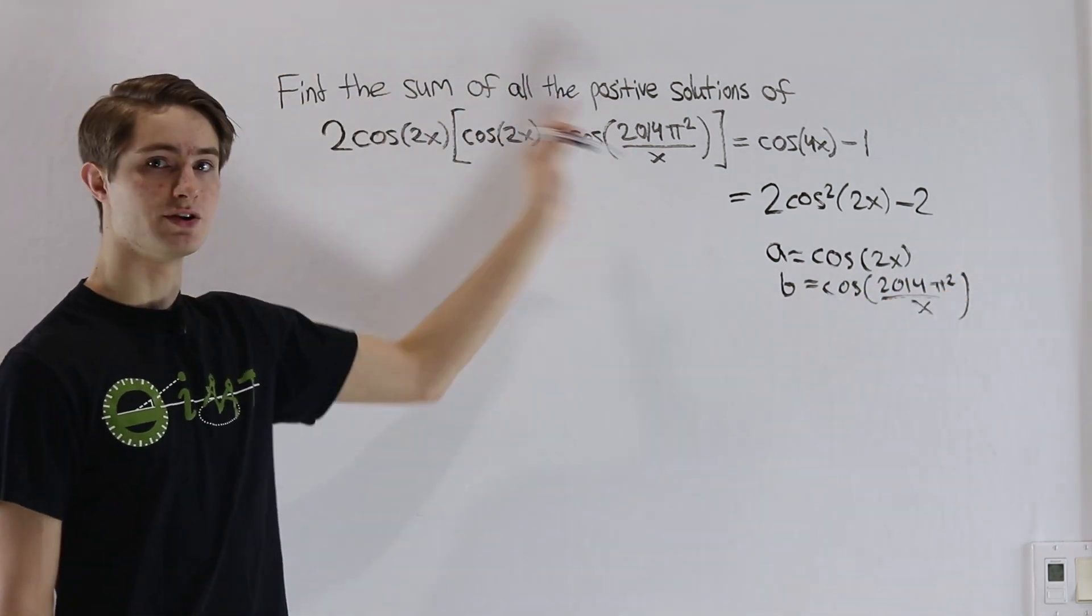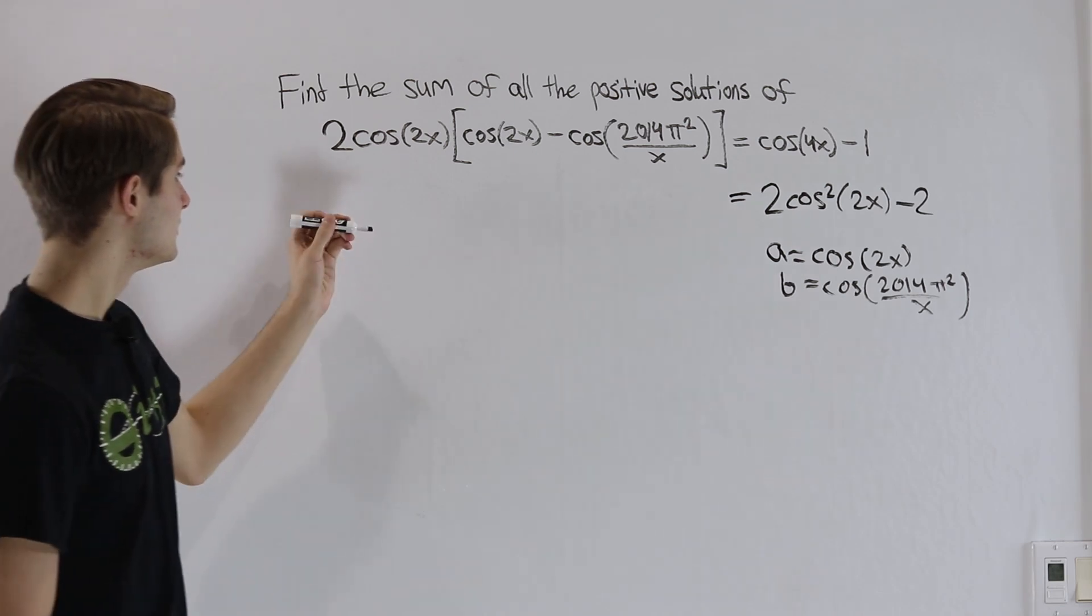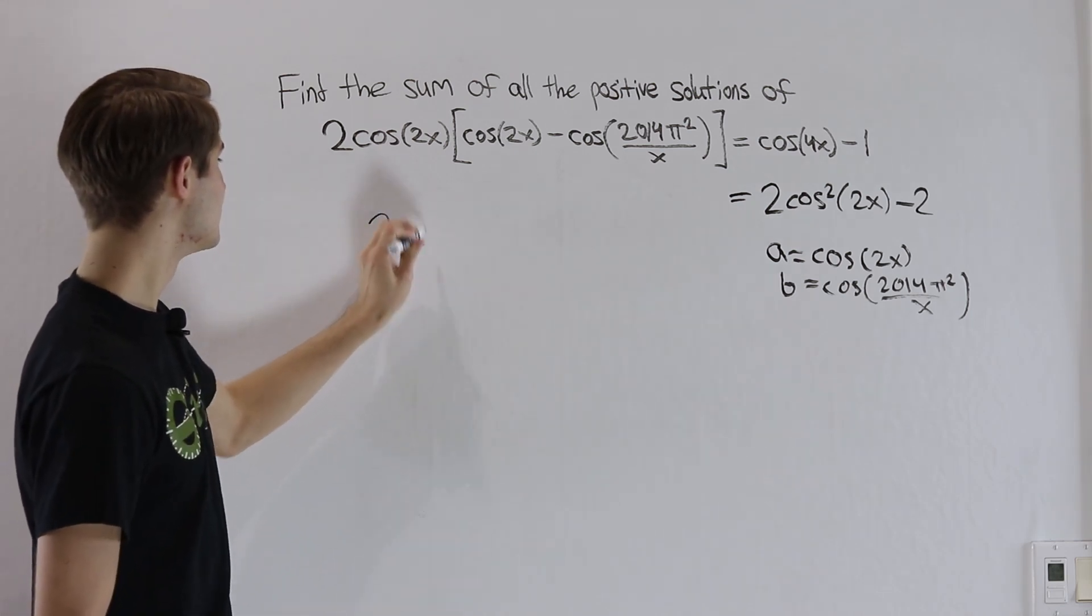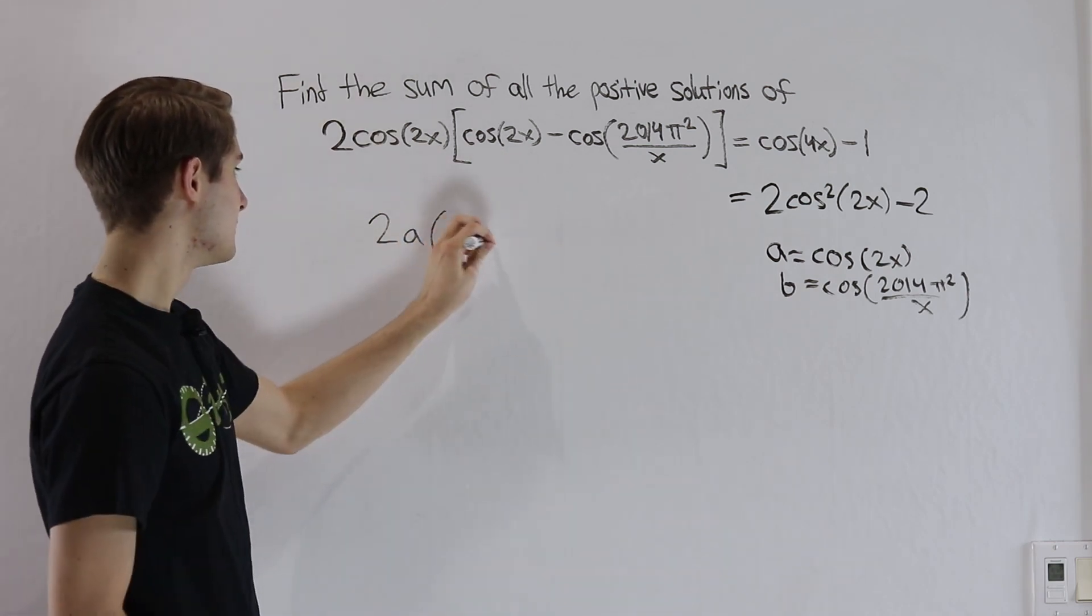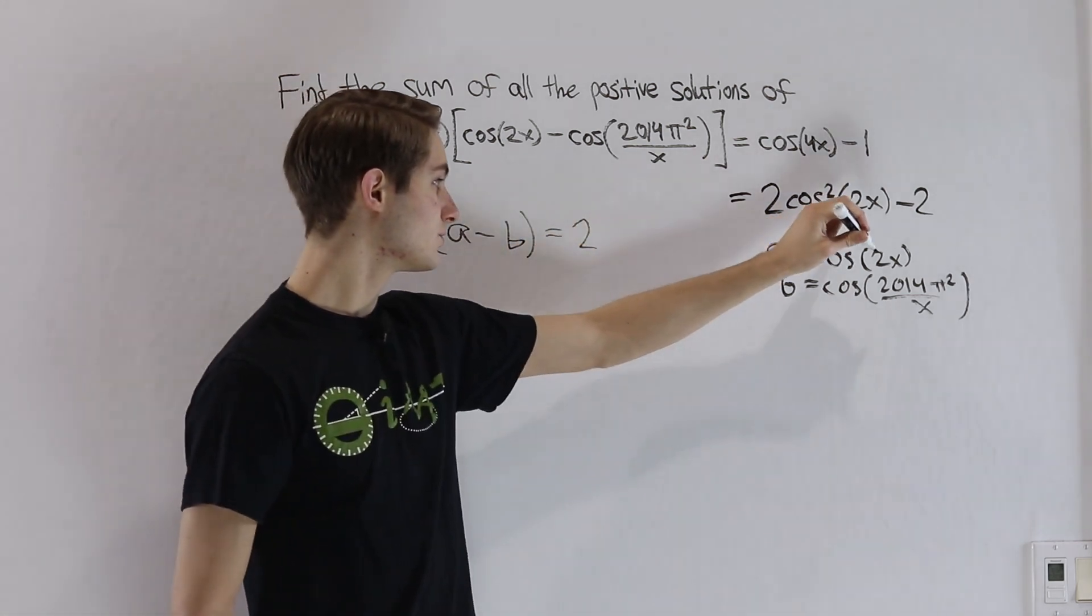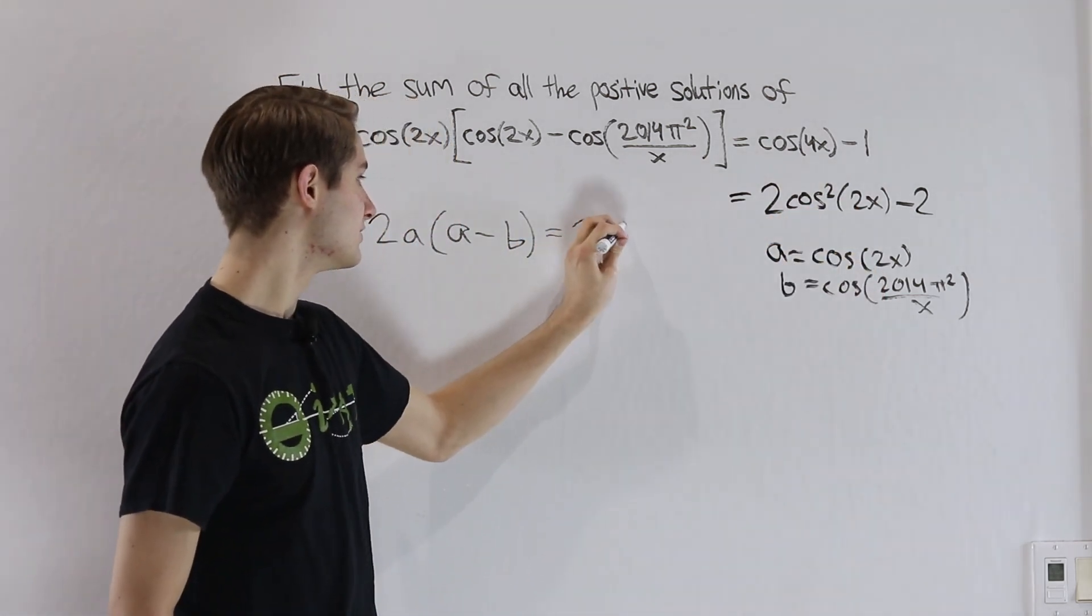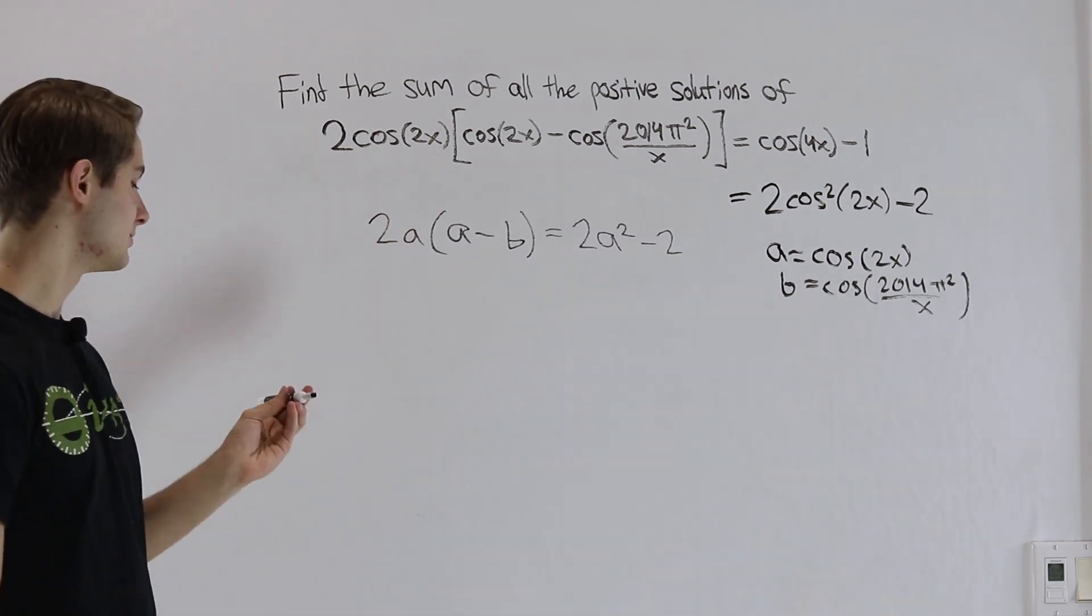This way we just don't have to see all these cosines while we're dealing with the expression. If we substitute that in, we're going to get 2 times cosine 2x is A, times this is A minus this is B, equals 2 cosine squared of 2x is going to be A squared and then minus 2. This is just a little nicer to do algebra on.